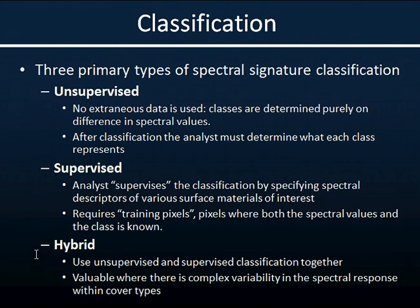The hybrid approach uses both unsupervised and supervised algorithms, but not simultaneously. Typically, you would run one first — for example, run an unsupervised classification, and then use a supervised classification to refine object assignments within those classes, or to decide whether to lump different classes together. These are especially valuable when you have a lot of reflectance variability within your image.